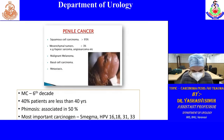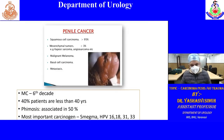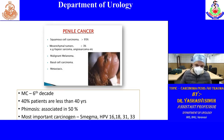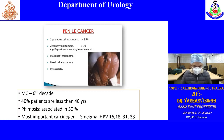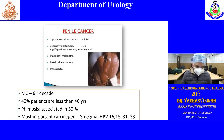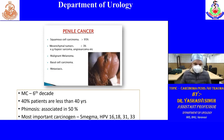Today we will have a discussion on carcinoma penis and genital urinary trauma. The most common histological pattern asked in exams is squamous cell carcinoma. Other histologies include mesenchymal tumours, malignant melanoma, basal cell carcinoma, or metastasis.